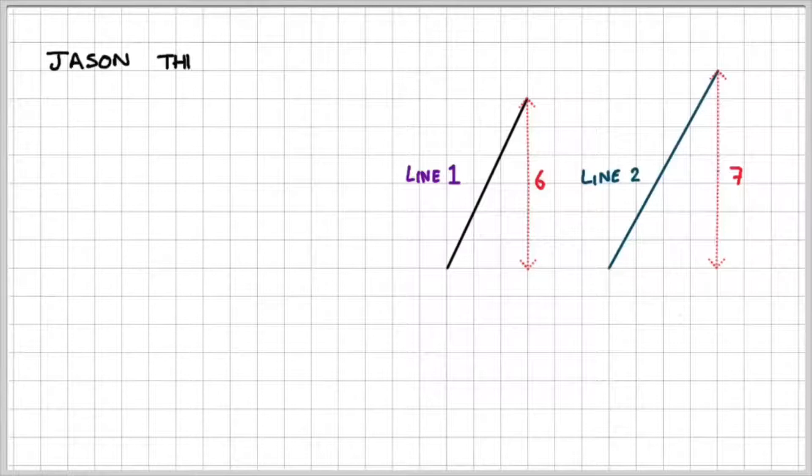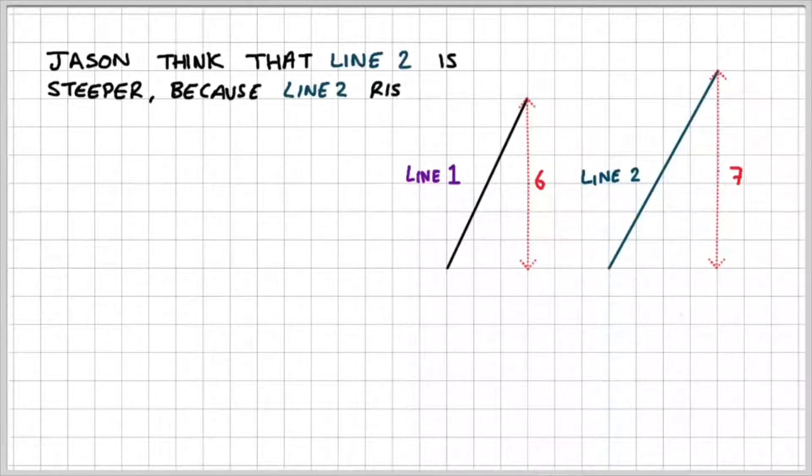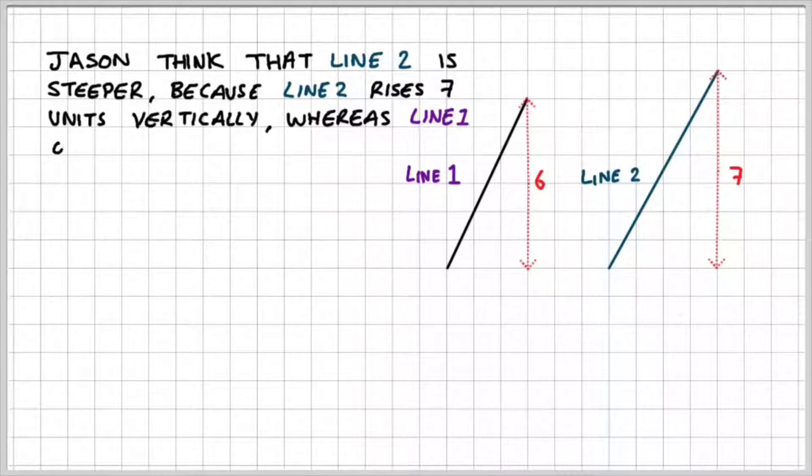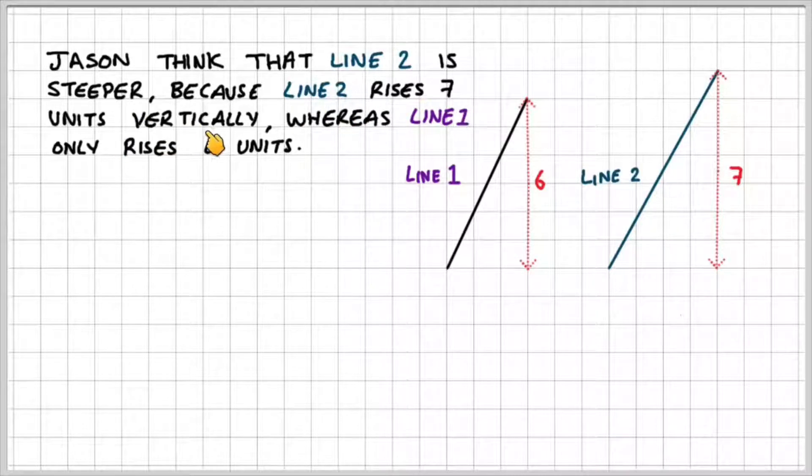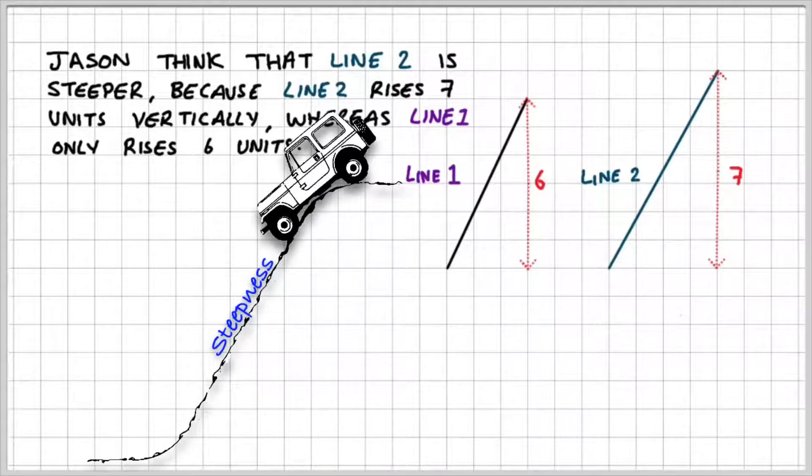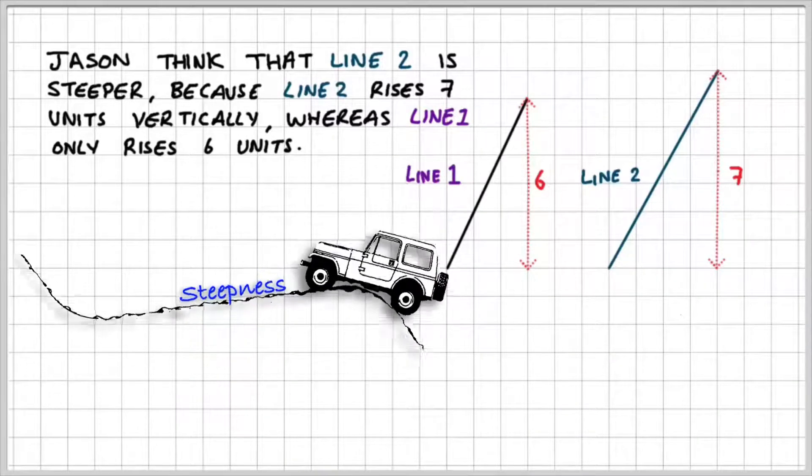So let's look at two lines then, line 1 and line 2. Jason thinks that line 2 is steeper because line 2 rises 7 units vertically, whereas line 1 only rises 6 units. In mathematics, when we talk about gradient, we're referring to the steepness of a line.